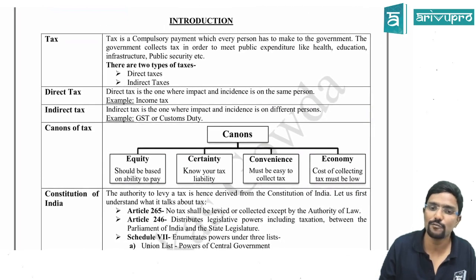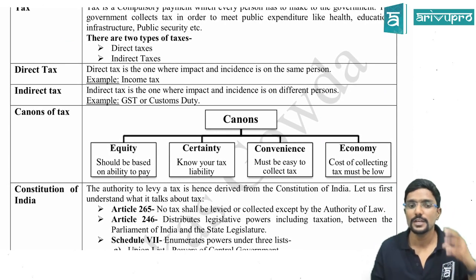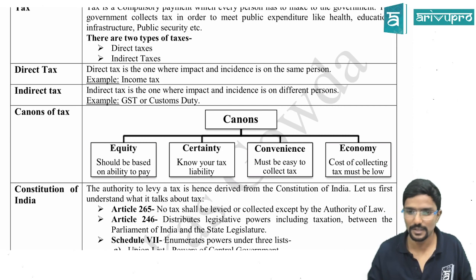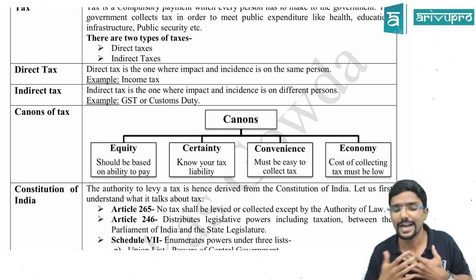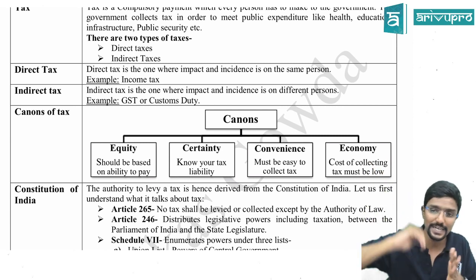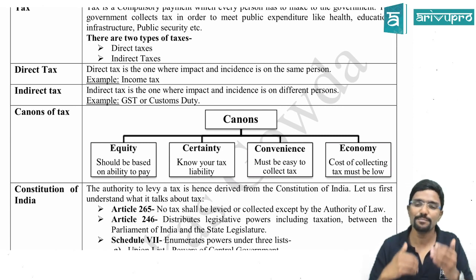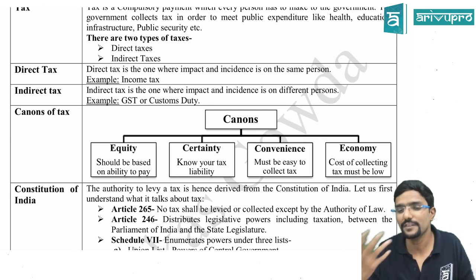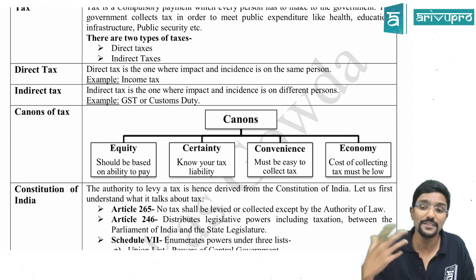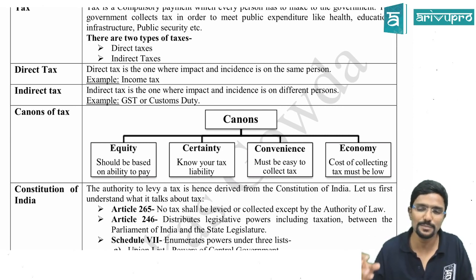Next, canons of taxation. There are four canons of taxation: equity, certainty, convenience, and economy. Equity means tax should be based on ability to pay — higher income means higher tax liability. Certainty means I should know what tax I pay, when I pay, and what rate is applicable. Convenience means filing returns and paying tax should be available at my convenience without difficulty. Economy means the government's cost of collecting tax must be as low as possible.